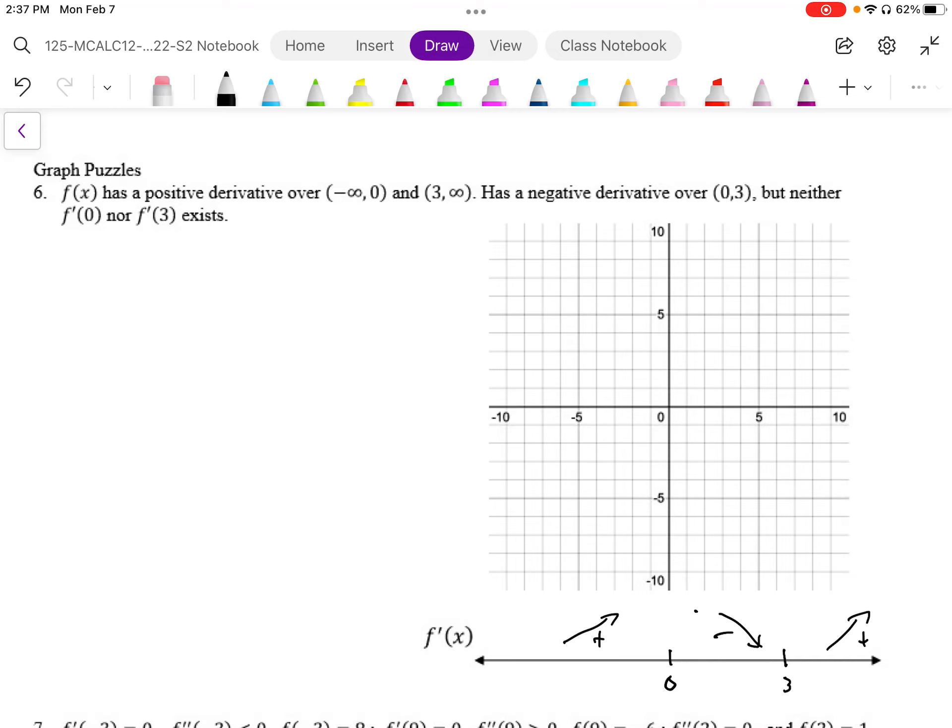So this is what the graph looks like, and it says that the derivative is non-existent, it doesn't exist at 0 and 3.